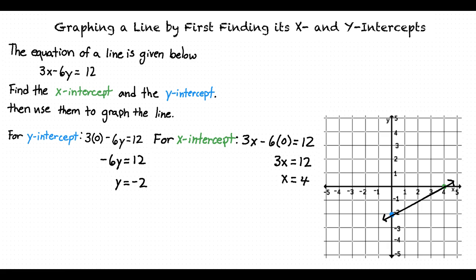To graph a line by finding its x- and y-intercepts, it's important to remember that the x-intercept occurs when the y-value of a line is equal to 0, and the y-intercept of the line occurs when the x-value of the line is equal to 0. Knowing this, we can find the numerical values for the x- and y-intercepts by using the line's equation. We can then graph the line by plotting the x- and y-intercepts and connecting the two points.